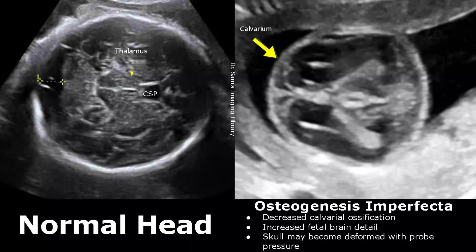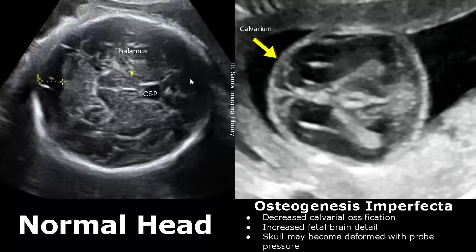Osteogenesis imperfecta is a congenital disorder which affects bones and connective tissue and has many features on ultrasound. The calvarium has decreased ossification — it is not hard enough and becomes softer than usual. The normal calvarium produces posterior shadowing and we cannot see brain anatomy in the near field. But in this condition, the skull bone is soft, allowing us to see more brain detail with no shadowing. Also, the skull can become deformed with probe pressure.